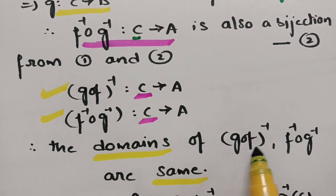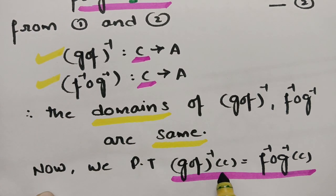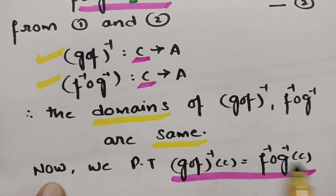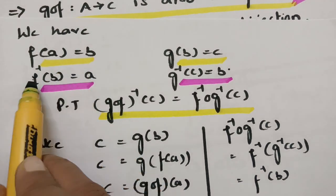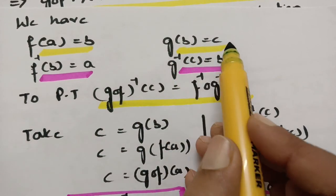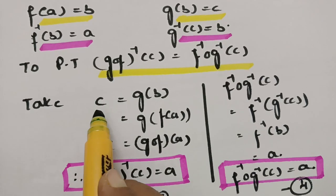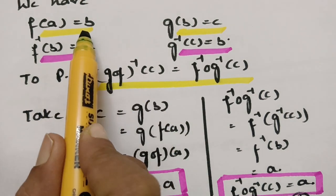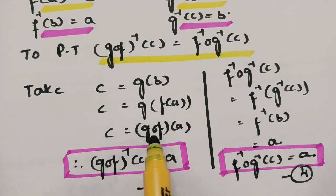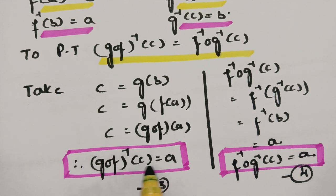Taking c as the domain: c equals G of b, and b equals F of a, so c equals G circle F of a. Sending G circle F to the other side gives G circle F whole inverse of c equals a. This is the LHS result.